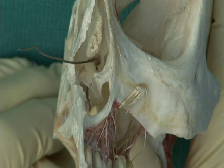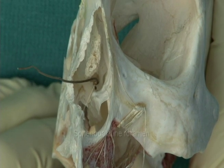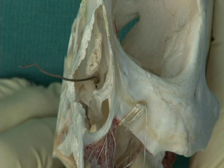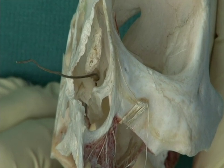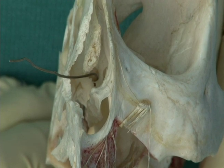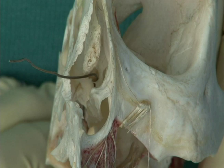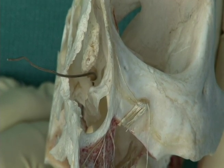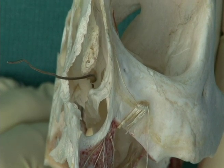Behind the superior meatus, there is an opening called the sphenopalatine foramen. There is a piece of wire in this foramen. The foramen leads to the pterygopalatine fossa. The artery that passes through the foramen is a terminal branch of the maxillary artery, the sphenopalatine, which distributes posterior lateral branches over the conchi and nasal septum. There are also two nerves that pass through this foramen.